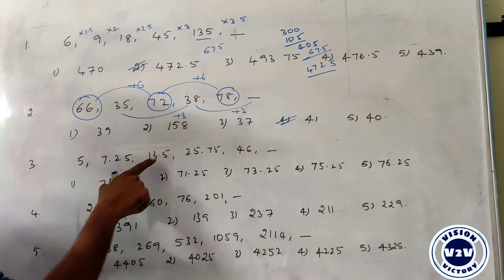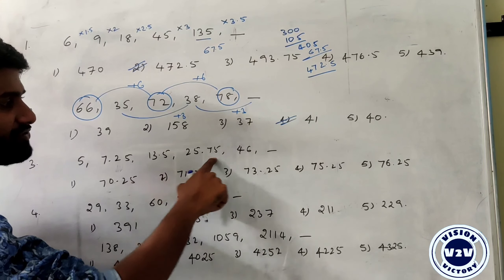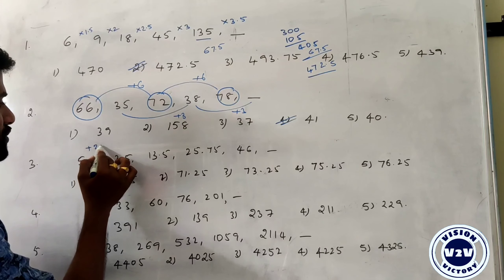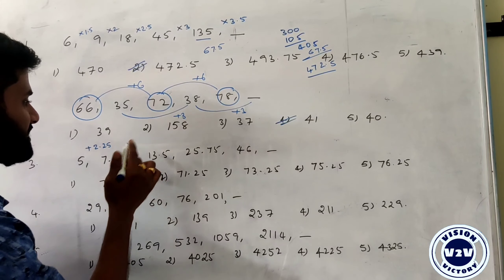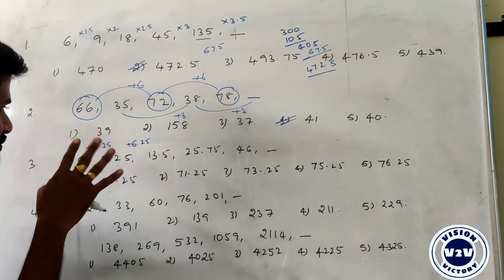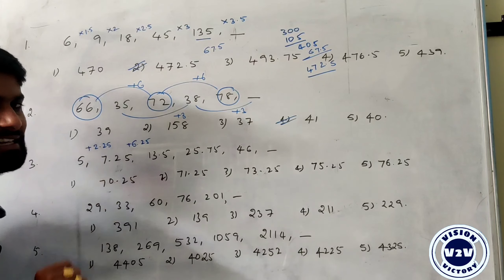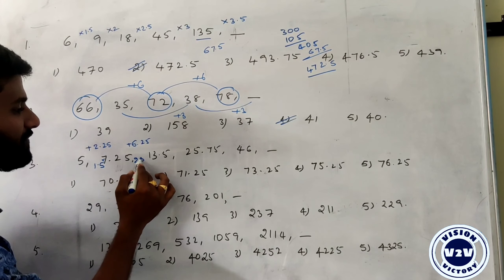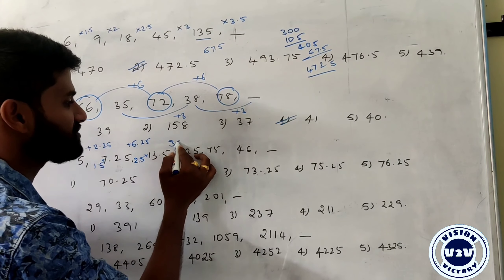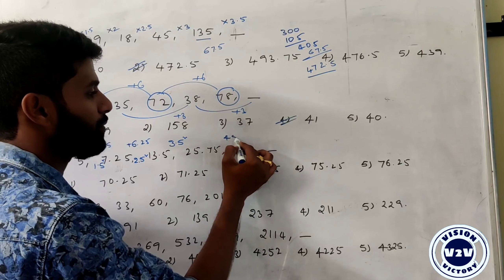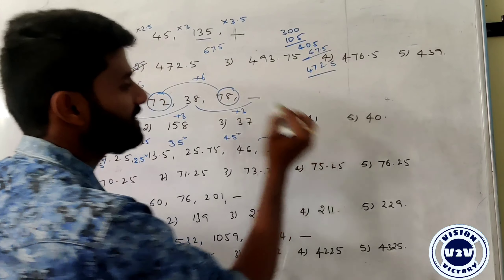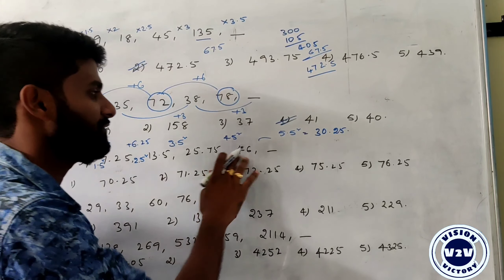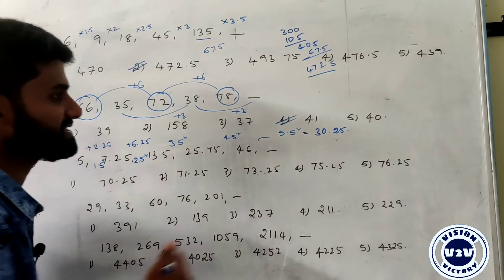Next: 5, 7.25, 13.5, 27. Checking differences: the difference between two numbers is 2.25 and between the next pair is 6.25. Eliminating decimals, 225 is 1.5 squared and 625 is 2.5 squared — so differences are squares of 1.5, 2.5, 3.5, 4.5. Next difference is 5.5 squared = 30.25. Adding 30.25 to 46 gives 76.25. So the answer is 76.25.